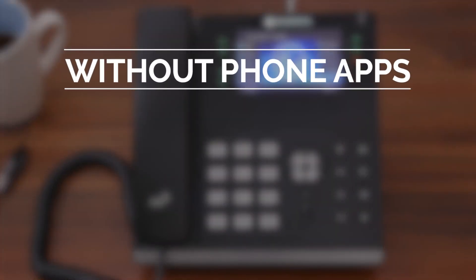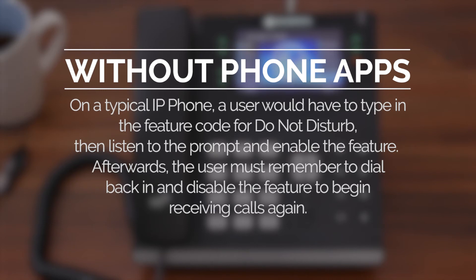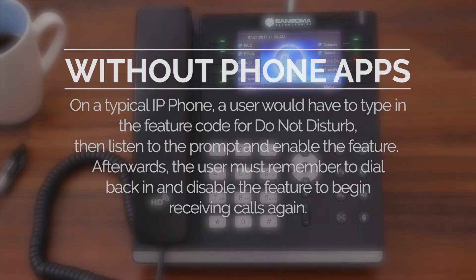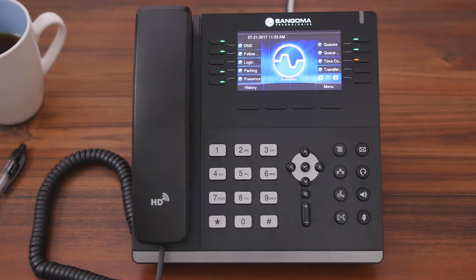On a typical IP phone, a user would have to type in the feature code for Do Not Disturb, then listen to the prompt and enable the feature. Afterwards, the user must remember to dial back in and disable the feature to begin receiving calls again. But with the Do Not Disturb application from Sangoma, users can quickly and easily set their Do Not Disturb status by the touch of a button.